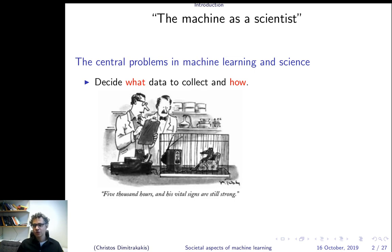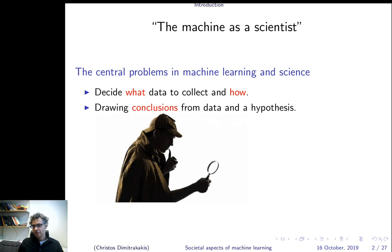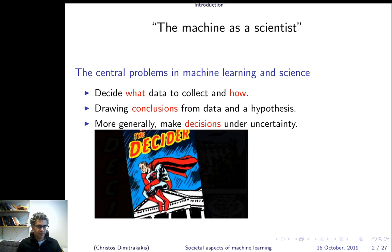We have to decide what data to collect and how. Most importantly, in both cases we will start with some hypothesis — an initial model of the world — and we would like to refine it using data, or completely refute it if possible. After we have gathered our data, we learn something about the world, but we still don't know everything. We still have things to discover. But we nevertheless have to make decisions anyway; we cannot just stop until we have learned everything and then make a decision.